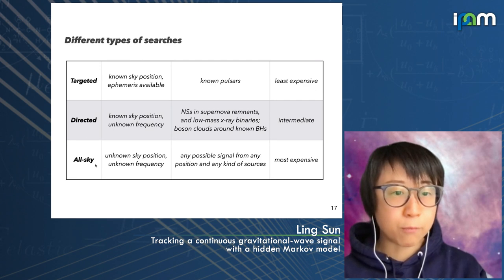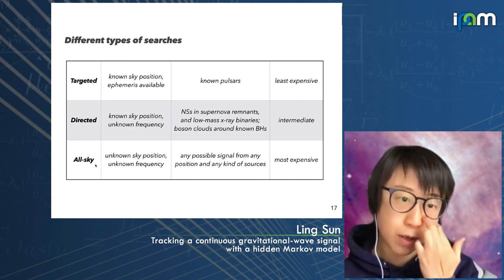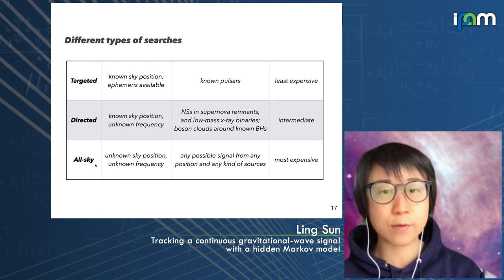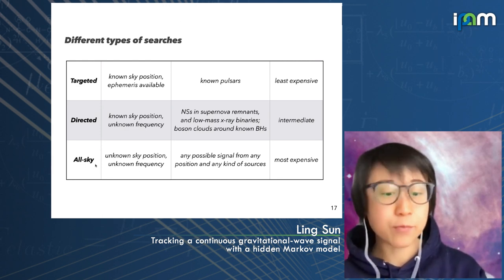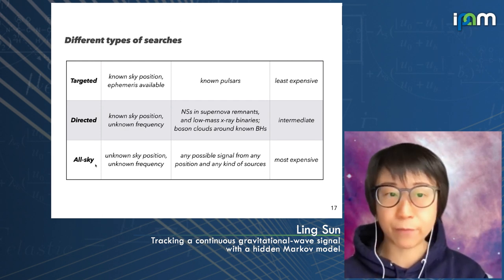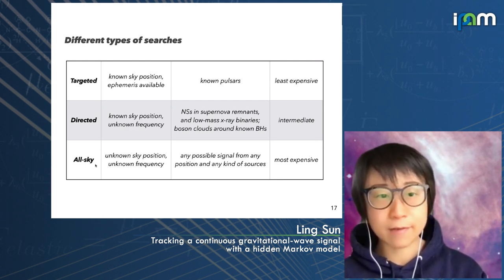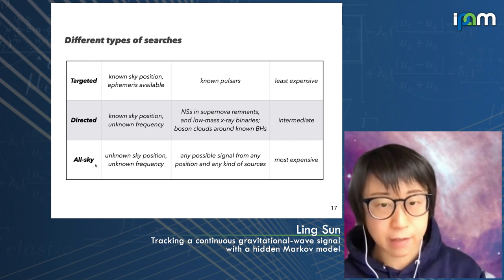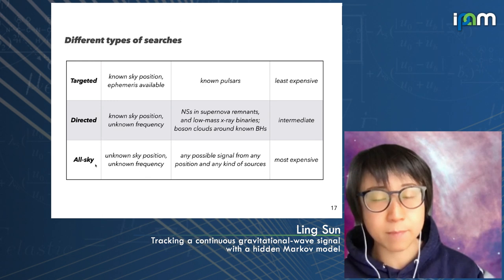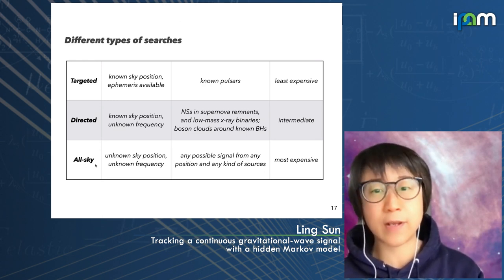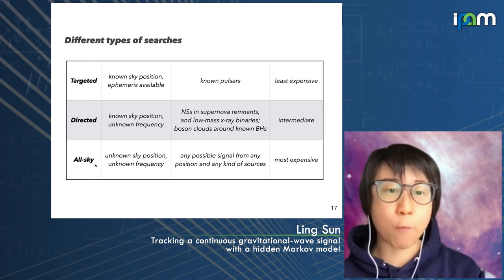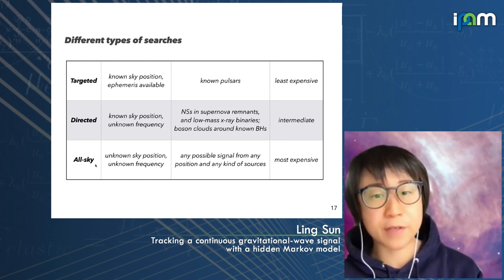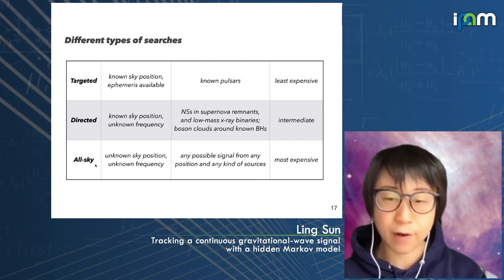For these searches, we have three main categories. First, targeted search — for objects with known sky position and available ephemeris, usually pulsars — searching a narrow frequency band following electromagnetic guidance. Second, directed search — for objects with known sky position but unknown frequency, like neutron stars in supernova remnants, accreting systems, or boson clouds around known black holes — searching a wide frequency band. Third, the most expensive all-sky search — for any possible long-duration signal at any sky position.